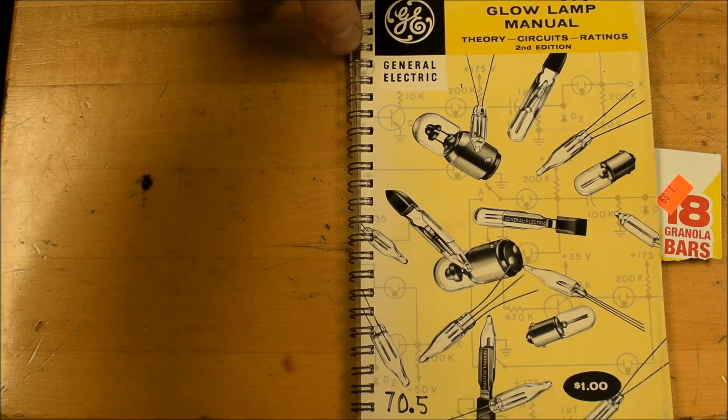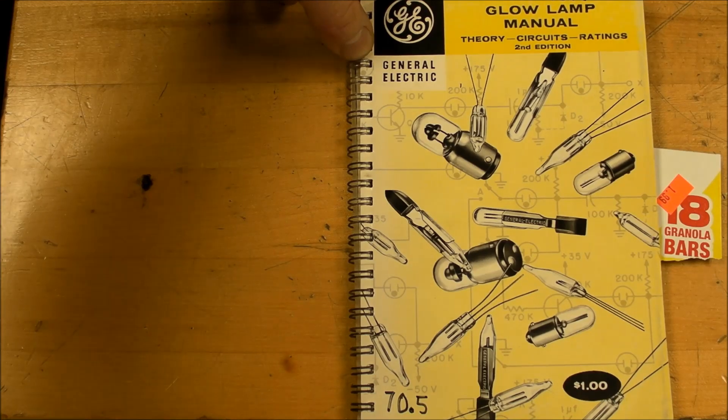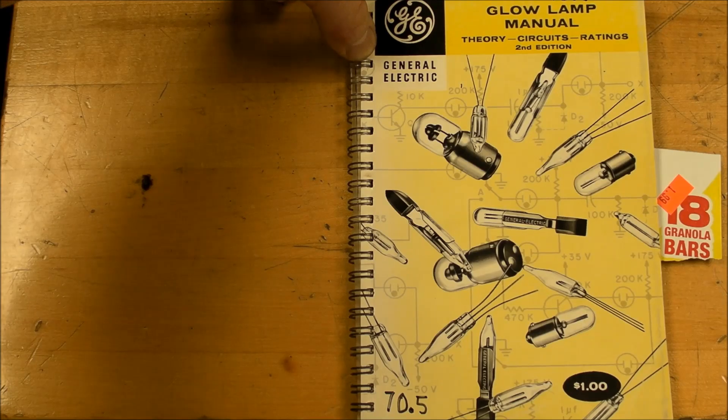This is Electronic Tonic here, and for a number of years I've had this old book, copyright 1966 General Electric Glow Lamp Manual: Theory, Circuits and Ratings.